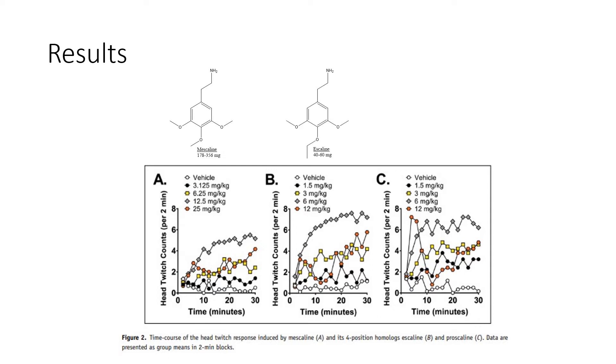If we look at escaline now, which is when we take the fourth position methoxy substituent and put an ethoxy substituent on it, we see a much stronger effect than mescaline, coming from 6 mg/kg of drug. This is producing much stronger head twitch counts at the time point of 30 minutes and before. I remember Shulgin kind of had this idea when he said elongating that chain made the drug more potent by his findings in P-Cal. As we elongate the chain even further on proscaline, we see similar effects. Elongating it from an ethoxy to a propoxy actually doesn't increase the potency of the drug too much.